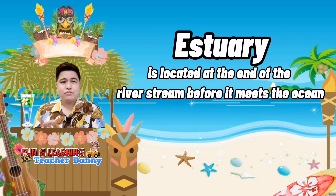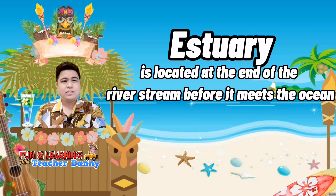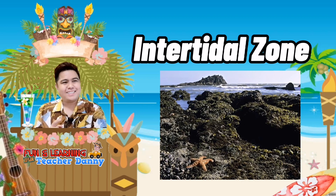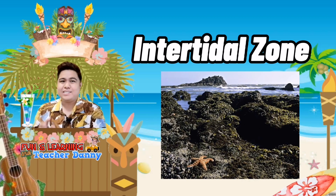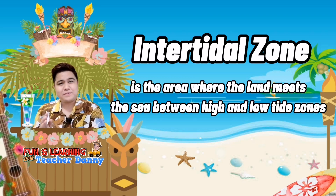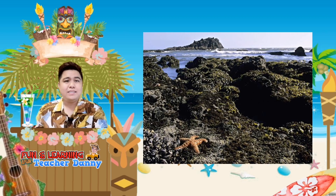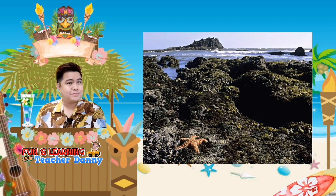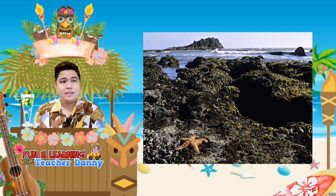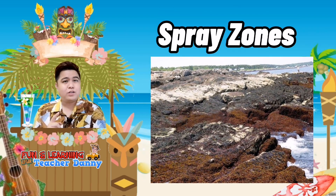If the estuary is located at the end of the river stream before it meets the ocean, what about the intertidal zone? The intertidal zone is the area where the land meets the sea, between high and low tide zones. This area is covered with water at high tide and exposed to air during low tide. It is usually found in the sandy beaches along the rocky shorelines.